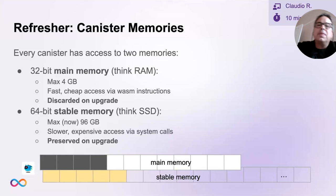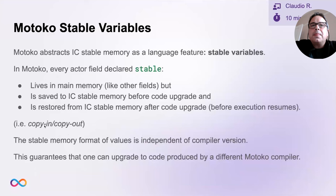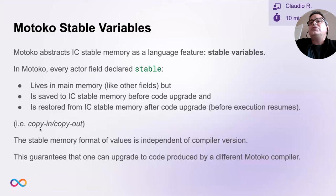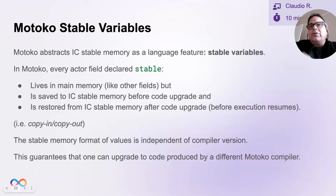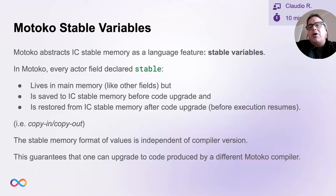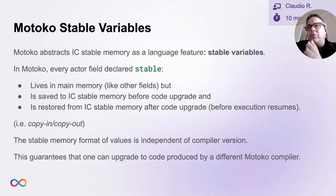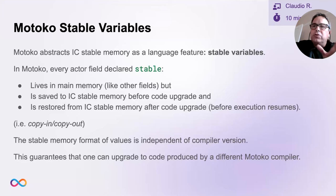Motoko actually abstracts IC stable memory as a language feature already — this feature is called stable variables. Every actor field declared stable lives in main memory just like other fields, but it has a special property: when you do an upgrade, the state of that variable will be saved to stable memory automatically. When you come up from the upgrade in the new version of the canister, the state of that stable variable will be restored from IC stable memory before execution resumes.